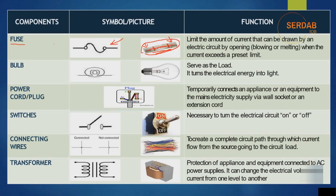The fuse is one of the most commonly used elements in the input circuit of any device, especially in power circuits. Next is the bulb. A bulb serves as the load and turns electrical energy into light. This is a tungsten lamp that consumes a lot of energy. Now we also have LED bulbs, which are more power-efficient and don't require gas inside.